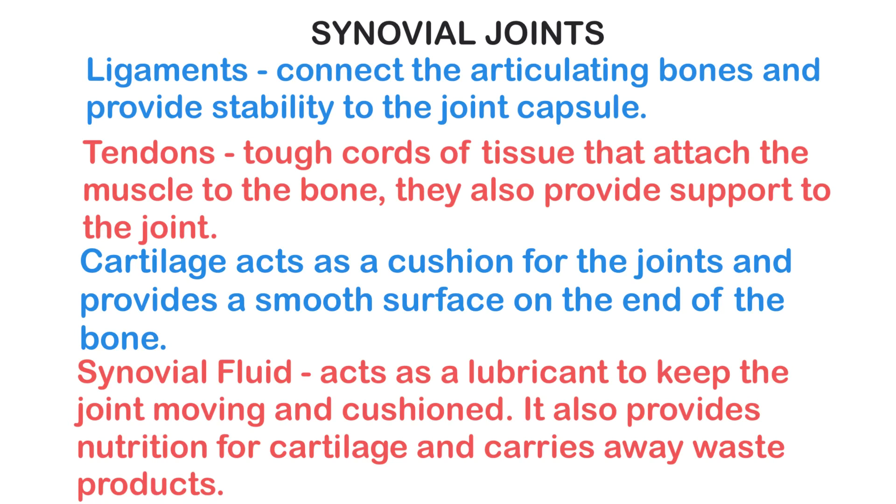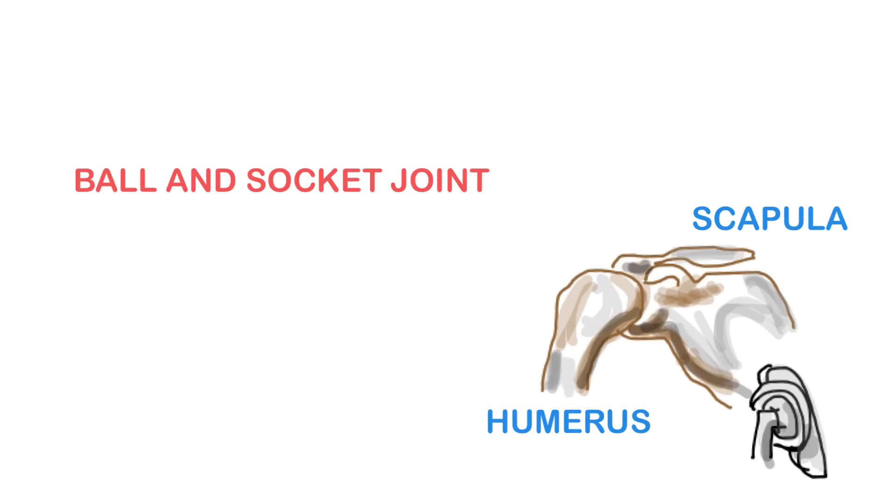There are six types of synovial joints that can be found throughout the body. A ball and socket joint can be found in the hip and shoulder joints. Ball and socket joints allow the greatest range of movement of all of the joints. In these types of joints, the rounded end of the bone, or the ball end, fits into the socket or cup formation of another bone, allowing rotation and four-way flexion.